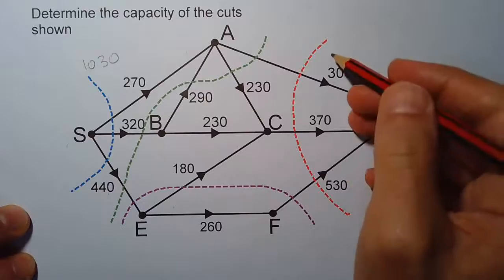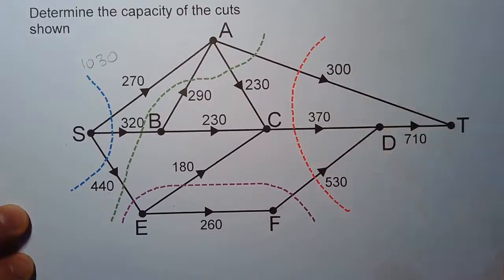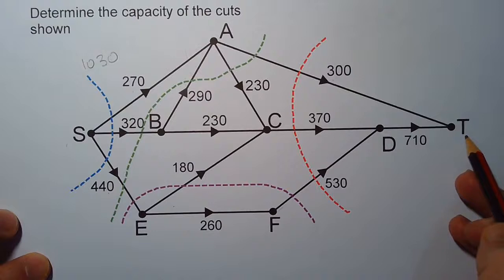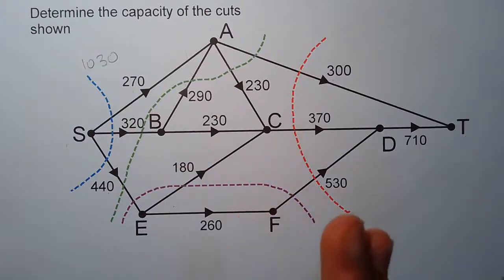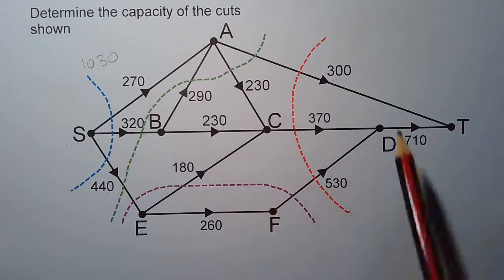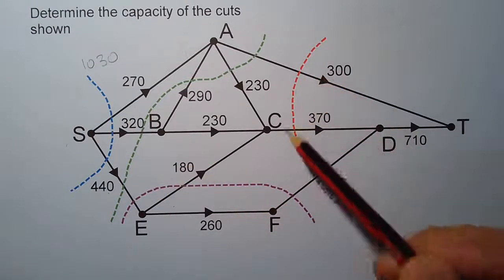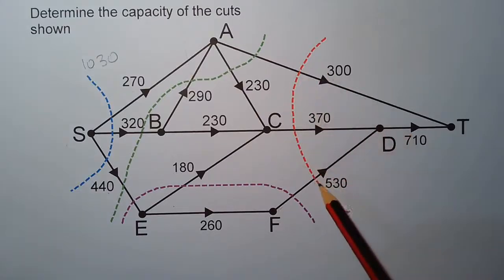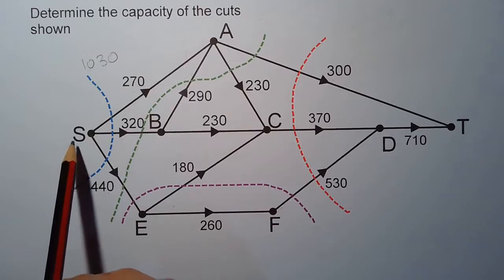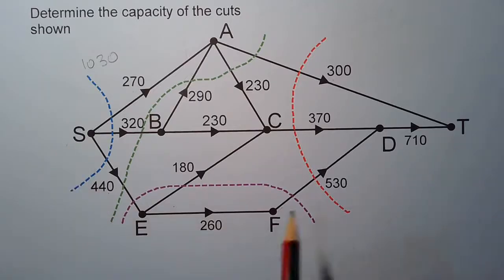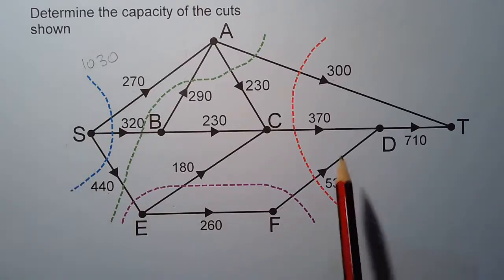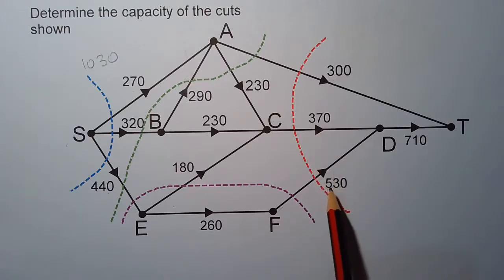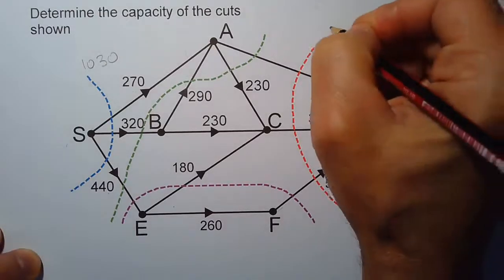Let's have a look at the red cut. That's another cut that obviously separates the source from the sink — a total separation, not a partial one. There are three edges it passes through, and all three are necessary to be cut in order to separate the source from the sink. So 300 plus 370 plus 530 gives us 1200.